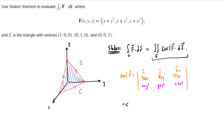So computing this cross product: in the first component we get zero minus 2Z, so minus 2Z. In the second component it's zero minus 2X. And then in the last component it's zero minus 2Y. So there's the curl — that's our vector field that we need to integrate.